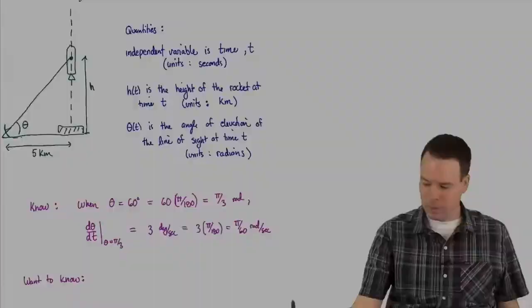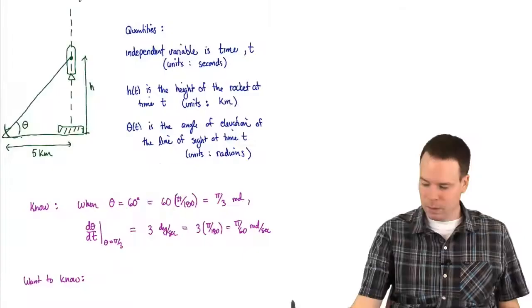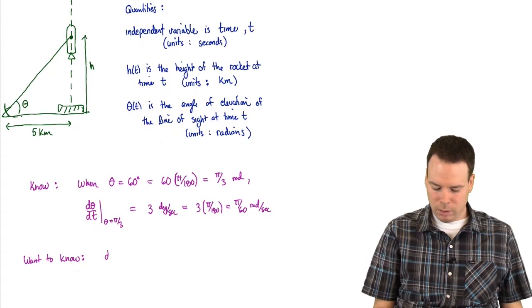So this means we want to know what dH by dt is when theta is pi by 3. That's what we want to know.